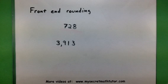This is basically how it works. We find the largest place value in the number, and then we round to that place value. All right, so let's see how this works.